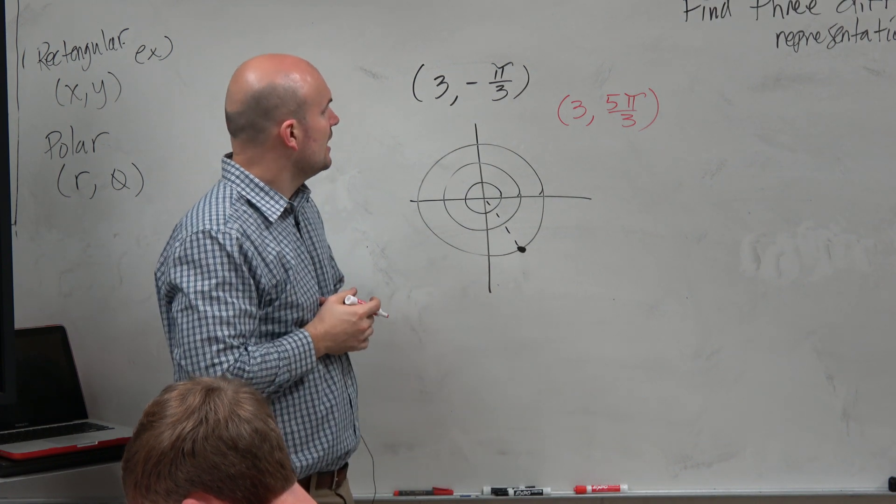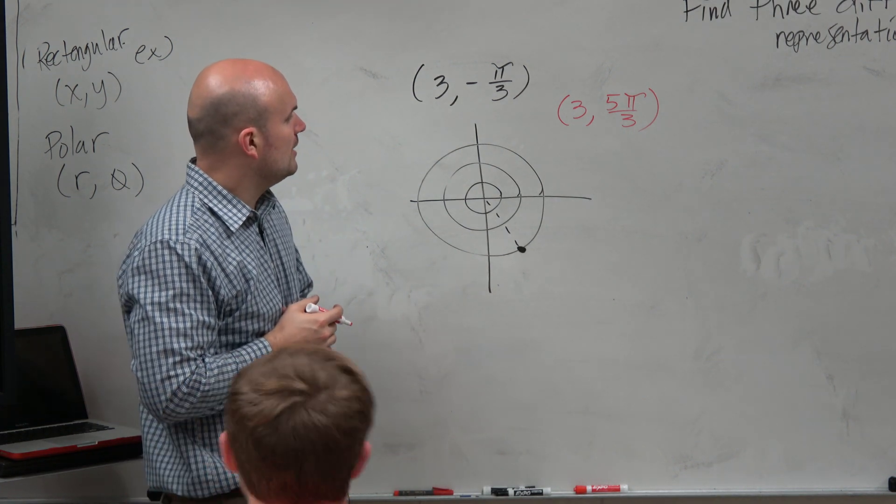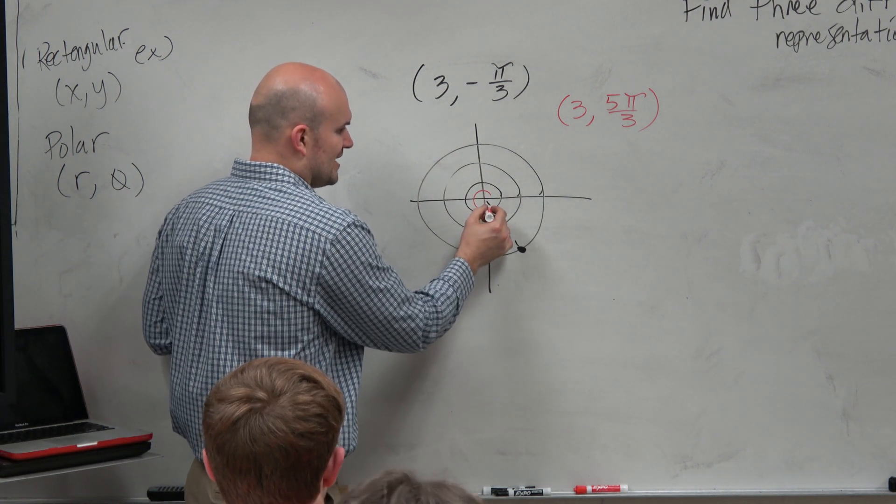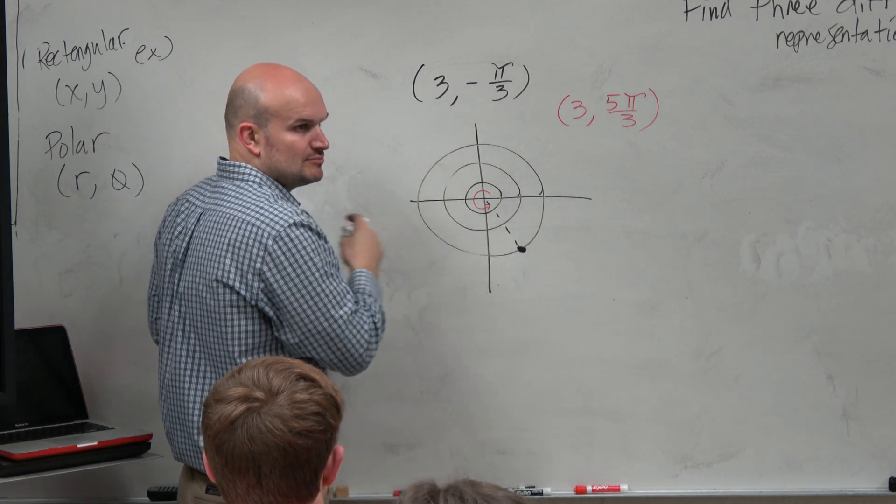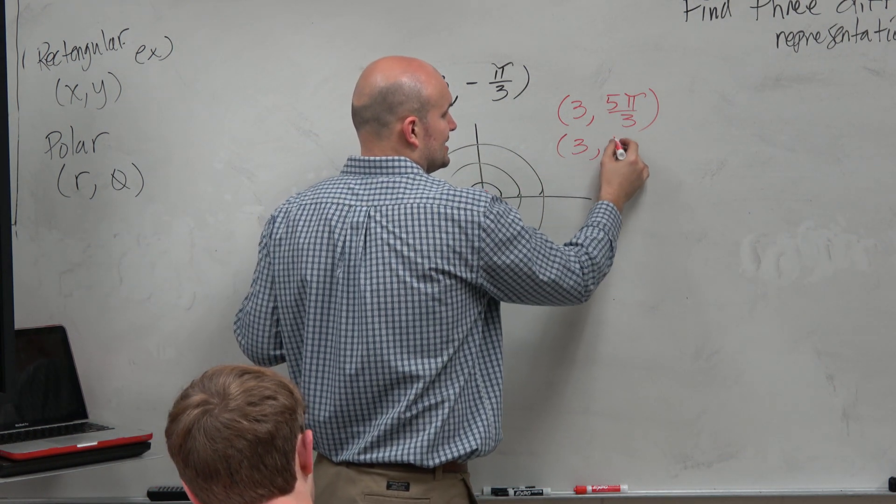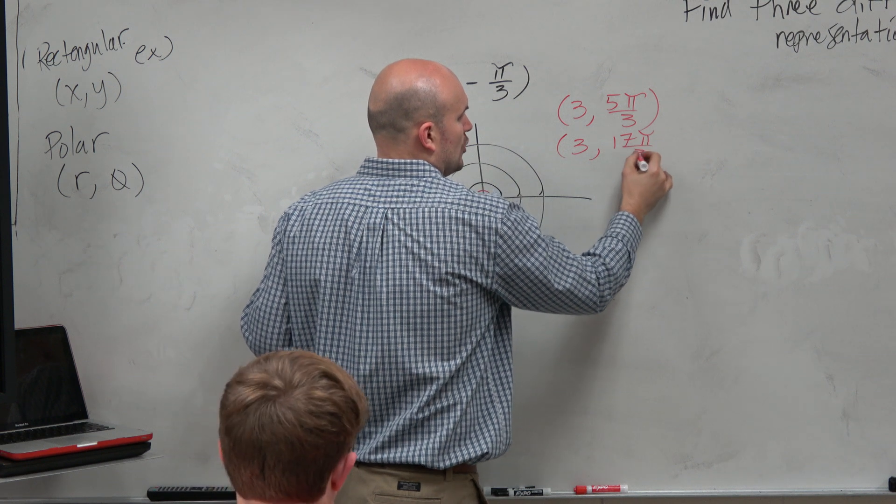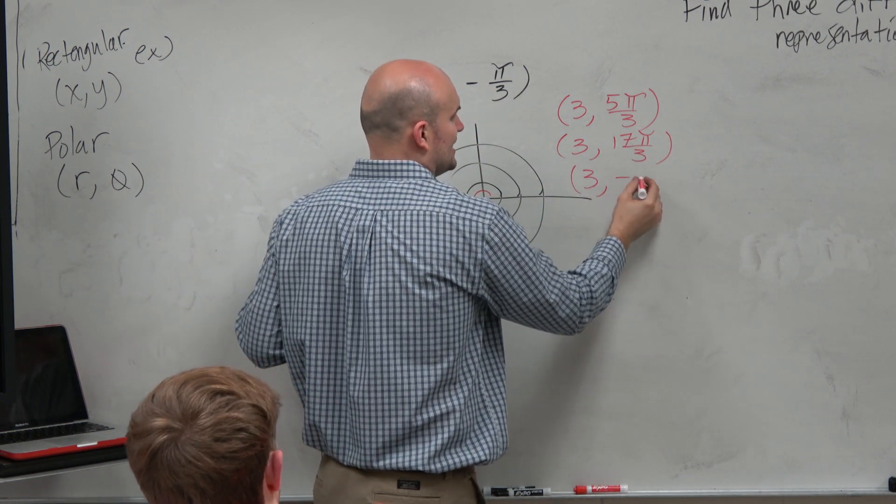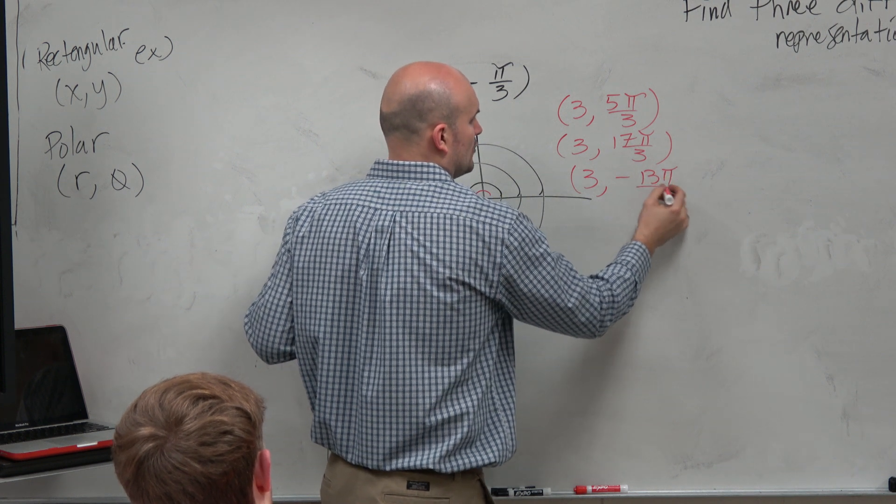Yes, right? Now also, hopefully you guys recognize, oh, if we can do the negative angle, couldn't we just keep on adding and subtracting 2 pi? Yeah. So I could add 2 pi again to that, and I'd get 17 pi over 3. Or I could subtract 2 pi from this, and I'd get negative 13 pi over 3.